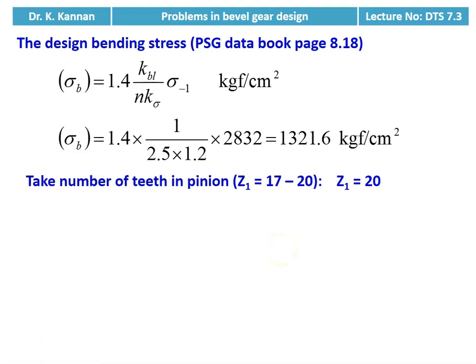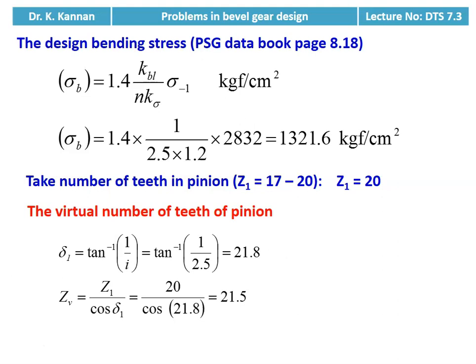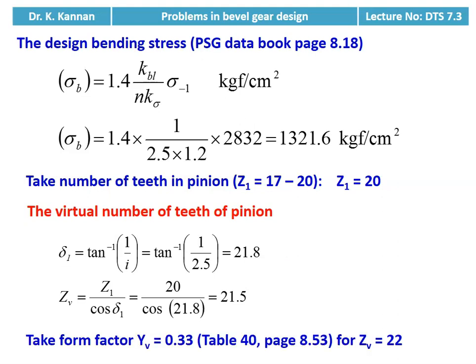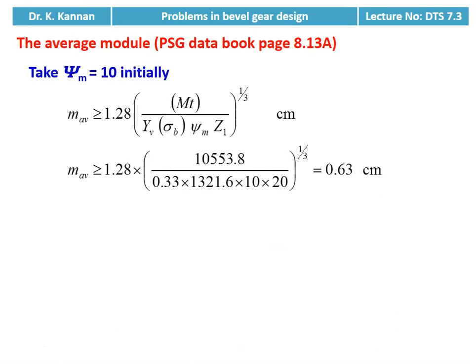We take number of teeth in the pinion Z1 = 20, choosing between 17 to 20. Then we calculate the virtual number of teeth for the pinion: delta_1 = tan⁻¹(1/i) = tan⁻¹(1/2.5) = 21.8°. Virtual number of teeth Zv = Z1 / cos(delta_1). We take psi_m = 10. The average module is ≥ 1.28 × MT / (Yb × sigma_b × psi_m × Z1^(1/3)) = 1.28 × 100553.8 / (0.33 × 1321.6 × 10 × 23^(1/3)) = 0.63 centimeter.